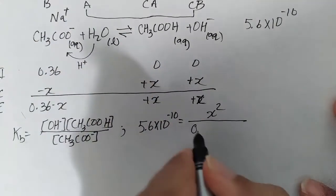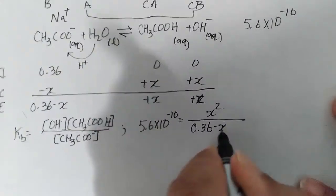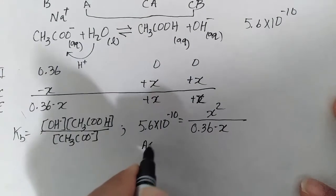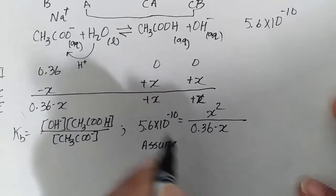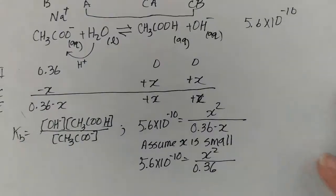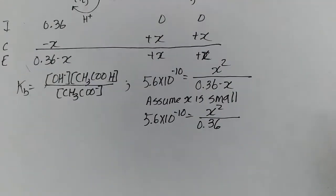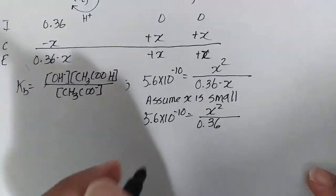This is 0.36 minus x. Yeah, I can assume that x is small because this is such a small number. So making x small, 0.36 minus x is essentially just 0.36.